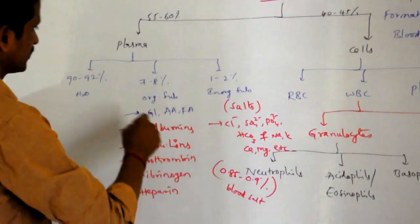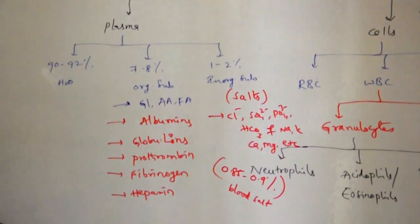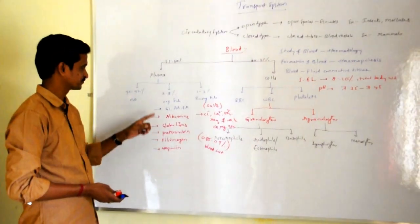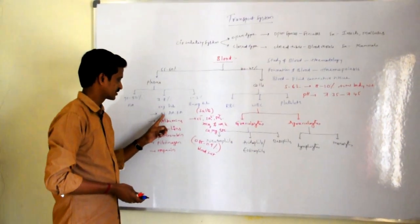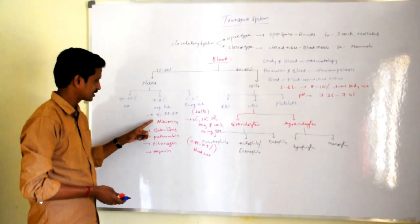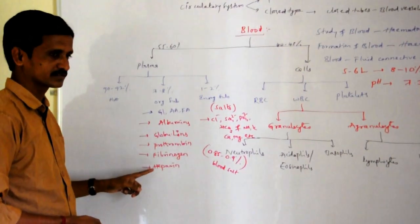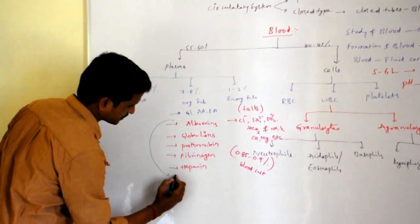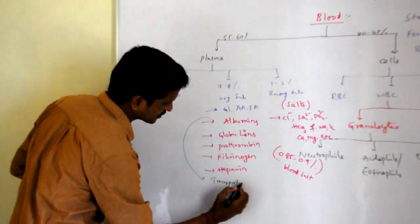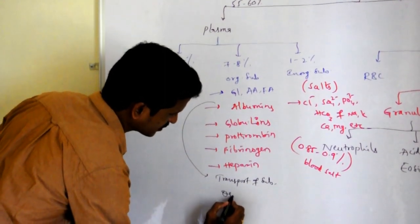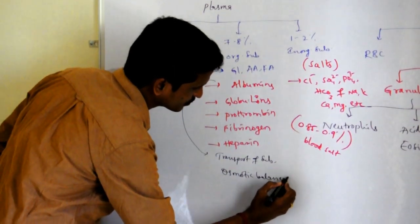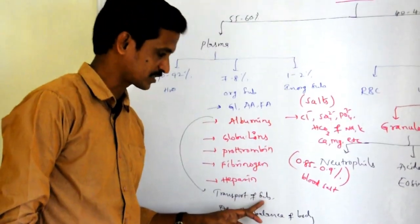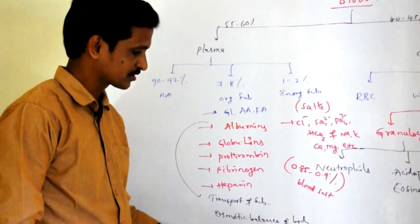Regarding the ingredients of plasma: albumins are responsible for transport of substances and also maintain osmotic balance of the body. Globulins perform the same two functions — transport of substances and regulation of osmotic balance — along with one additional function: providing defense.